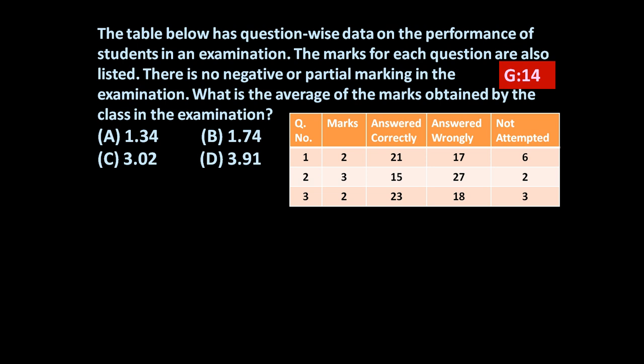So friends to answer such question this table is given. If you see question number 1, 2, 3, three questions are there. Their marks are 2, 3, and 2. Answered correctly: 21 students answered correctly, 15 students answered correctly, 23 correctly. Answered wrongly: 17, 27, 18. Not attempted: 6, 2, and 3.